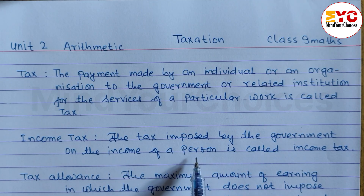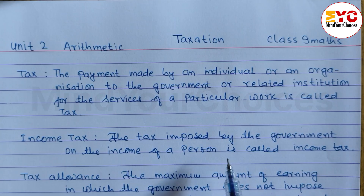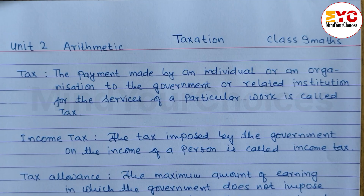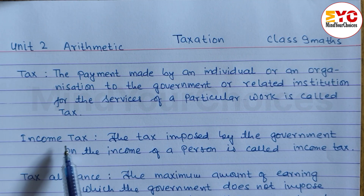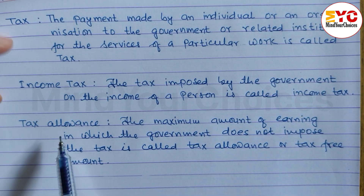The tax imposed by the government on the income of a person is called income tax. Whoever is a person providing services and earning income, after earning that income, one percent tax must be paid to the government. The tax paid from income is known as income tax.